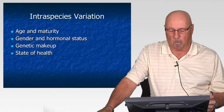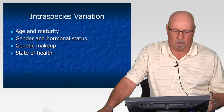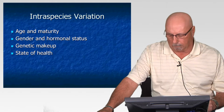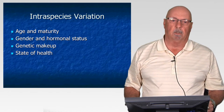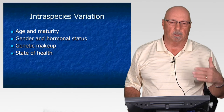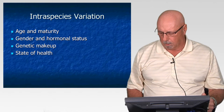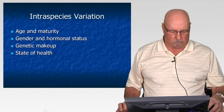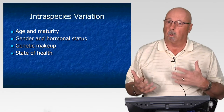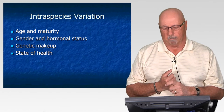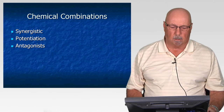We mentioned gender, hormonal status, genetic makeup, ethnic makeup. Also, intra-species variation will depend on the individual's state of health — whether the worker is in good general health or in poor health, overweight, doesn't have a good diet, or is a smoker — all of these can be contributors.